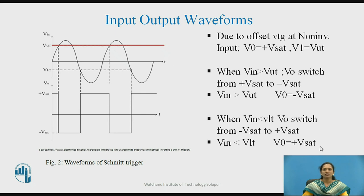Now, when Vin is less than VLT — this is the second condition. VLT is the lower threshold point, and when the signal falls below it, the output will switch from the −Vsat level to the +Vsat level.